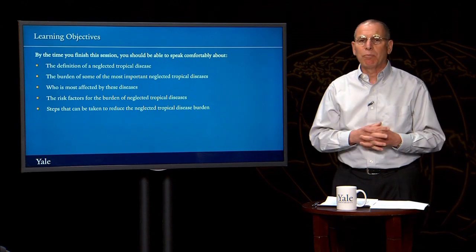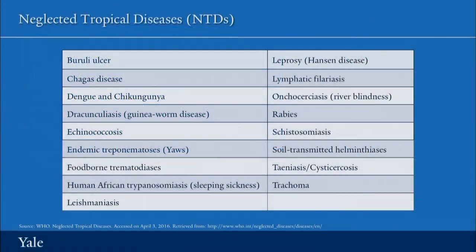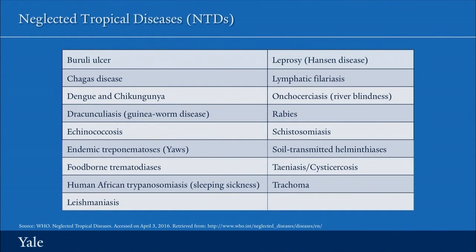Now let's look at the burden of the neglected tropical diseases. The World Health Organization now classifies 17 different diseases as the neglected tropical diseases. Here is the list of them, and I want to encourage you — with the help of the websites of the U.S. Centers for Disease Control and Prevention and the Global Network on Neglected Tropical Diseases of the World Health Organization — to explore these by going into those websites and looking up the individual diseases. You'll find an interesting account of each one of them.